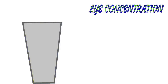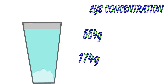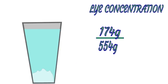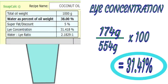For the next two calculations we're going to ignore the oils and just think about our lye solution. For lye concentration, we take our lye at 174 grams and add our 380 grams of water to get a total lye solution of 554 grams. We then work out the percentage of lye in that solution: 174 divided by 554 times 100 gives us 31.41%, so our lye solution is just over 31% lye.